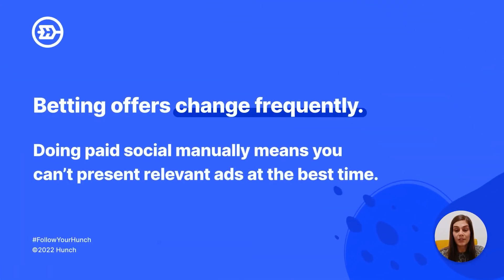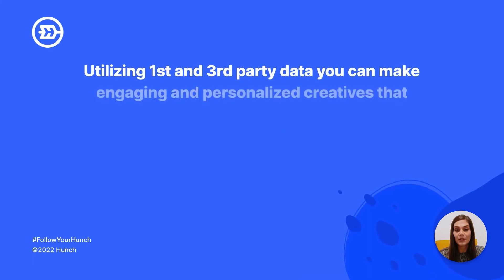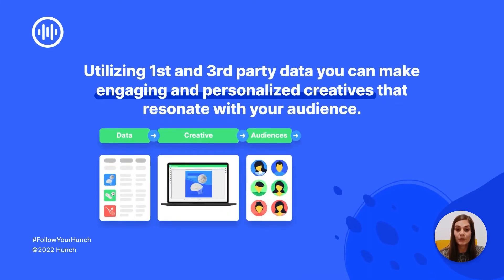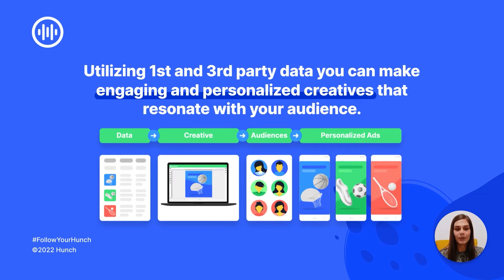The pressure mounts because betting offers change frequently, even several times per day. Doing paid social manually means you can't present relevant ads at the best time. Facebook doesn't have the time to finish the learning phase and optimize your campaigns for better performance. That's when 2022 marks the turning point for betting and casino advertisement on paid social. Once you integrate your real-time data into your campaigns and start delivering hundreds of offers each day, you'll finally unlock paid social for betting and gambling. Millions of ads are launched on Facebook every month — well-structured campaign workflow automation gives you a chance to stand out. Utilizing first and third-party data, you can make engaging and personalized creatives that resonate with your audience, meaning you'll be able to advertise thousands of different matches and games each day.